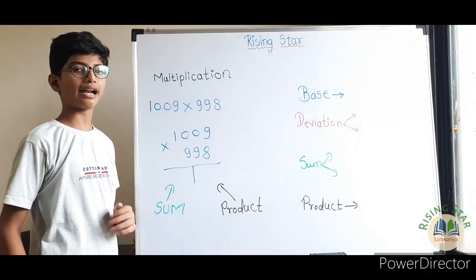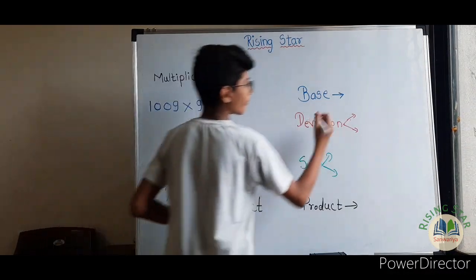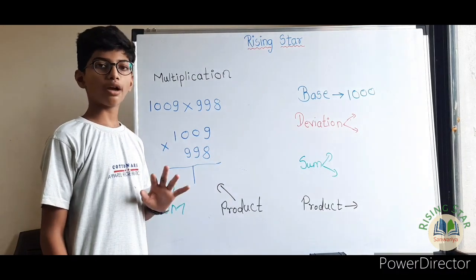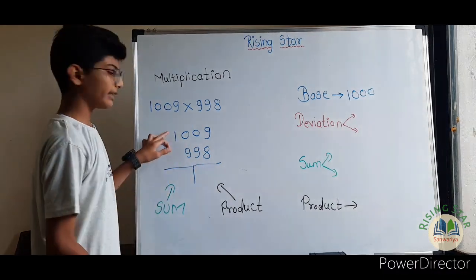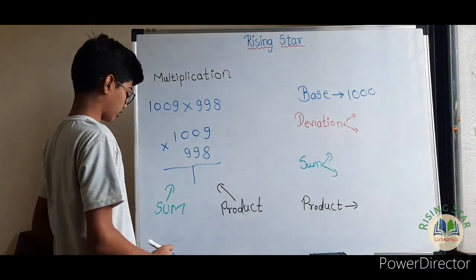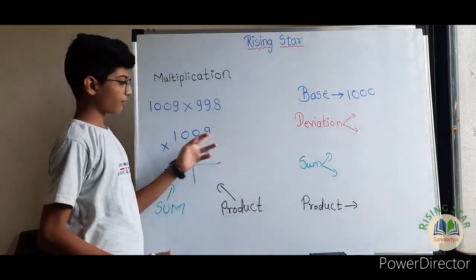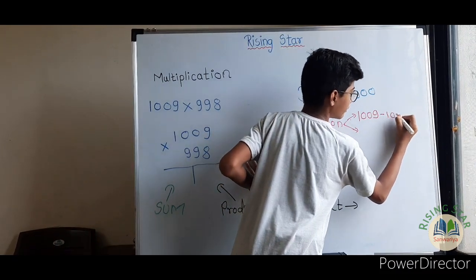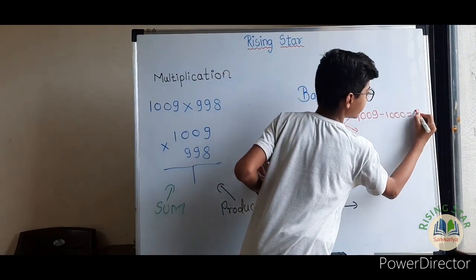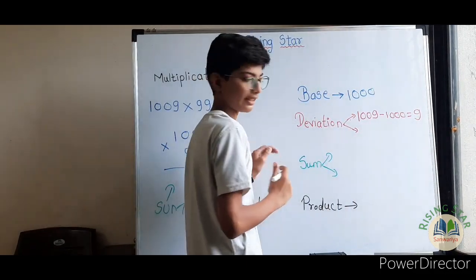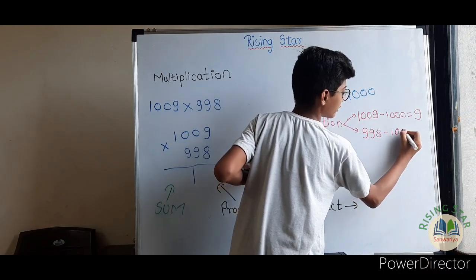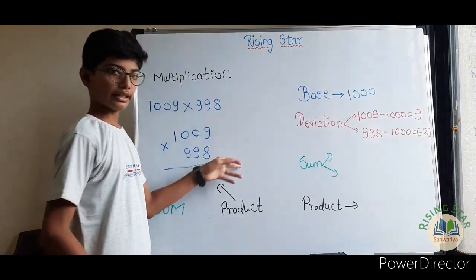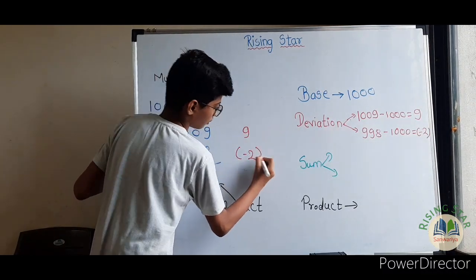1009 and 998 are near to 1000, so 1000 will become our base. Now the next step is to find the deviation. For finding the deviation, you have to subtract the base from the numbers. 1009 minus 1000 gives our first deviation of 9. And 998 minus 1000 gives our second deviation of minus 2. So write 9 and minus 2 here.